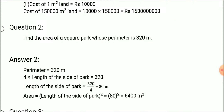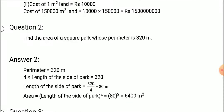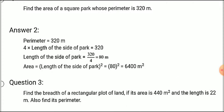To summarize: the perimeter is 320 meters, so the length of the side of the park is 320 divided by 4, which is 80 meters. Therefore the area equals 80 squared, which is 6400 square meters.